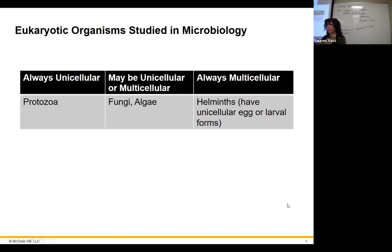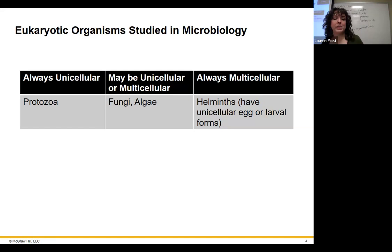Eukaryotes include unicellular organisms, ones that can be unicellular or multicellular, and ones that are always multicellular. Helminths — which could be any animals really — are going to be multicellular. Helminths can have a unicellular egg and unicellular larval forms in some species, but the adults that actually reproduce are always multicellular. Those are the parasitic worms.